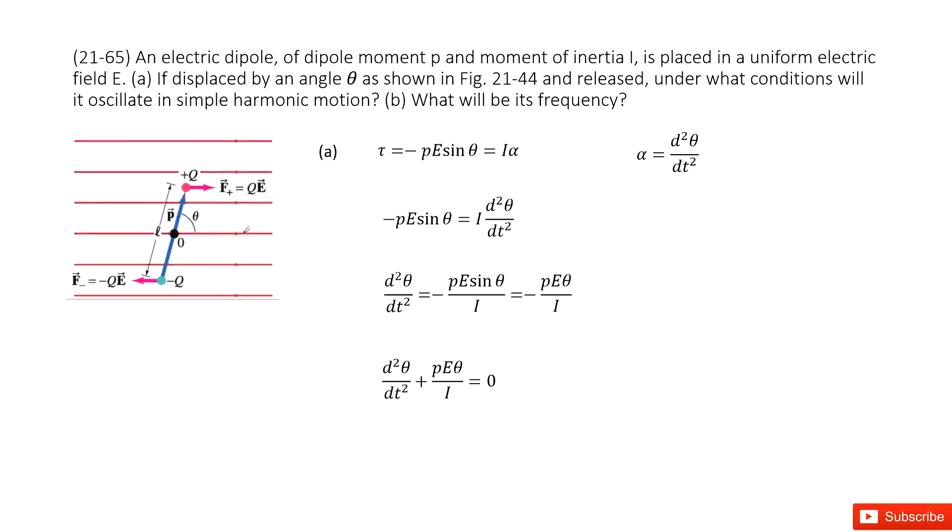Chapter 21 is about electric charge and electric field. So we can see we have an electric dipole, and dipole moment P and moment of inertia I are given.